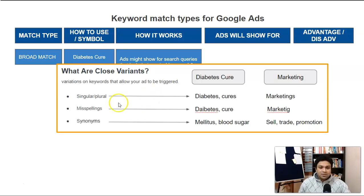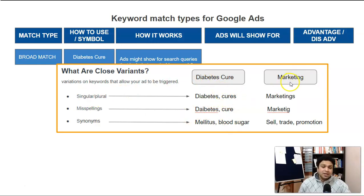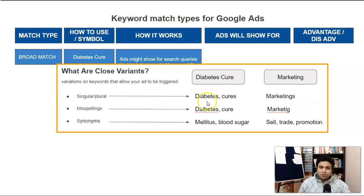Close variants stand for singular and plural forms of the keywords, as well as misspellings and synonyms — alternative words people use. For example, if somebody types 'diabetes and cures' it will trigger our ad. Misspellings will also trigger the ad. And synonyms like 'mellitus,' 'blood sugar,' or for marketing: 'sell,' 'trade,' 'promotion' — all these will show our ad, which we don't want.